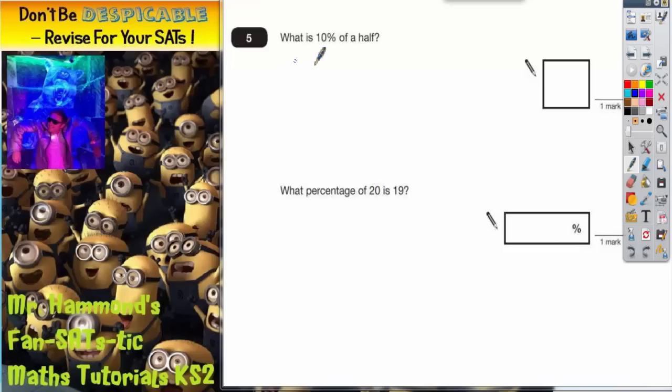Question 5, what is 10% of a half? Well, to find 10% of anything you should know that you have to divide it by 10. So what we've got to do is do a half divided by 10. It may even be simpler to think about this as what is 10% of 0.5, because a half is 0.5. So 10% of 0.5, we've got to do 0.5 divided by 10.